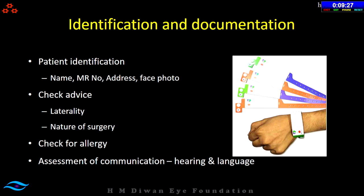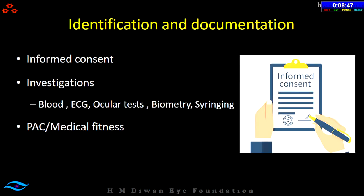Check whether an informed consent has been taken, signed by the patient; if the patient cannot sign, a thumb impression or a substitute decision maker for minor patients is acceptable, and the surgeon also needs to sign. Check for all blood investigations, ECG, and other tests — they need to be there before the patient is shifted into the OR. For cataract surgery, check biometry reports and ensure it is for the same patient. A very important and often missed step is checking the lacrimal apparatus — remember to do syringing for all patients.